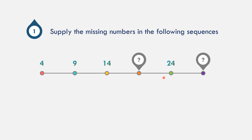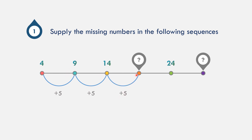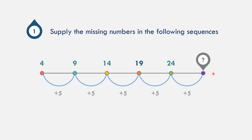Let us see what could be the pattern. The pattern to be added from 4 to 9 is 5. 9 plus 5 is 14. 14 plus 5 is 19. So it means the fourth term is 19. 19 plus 5 is 24, and 24 plus 5 is equal to 29.